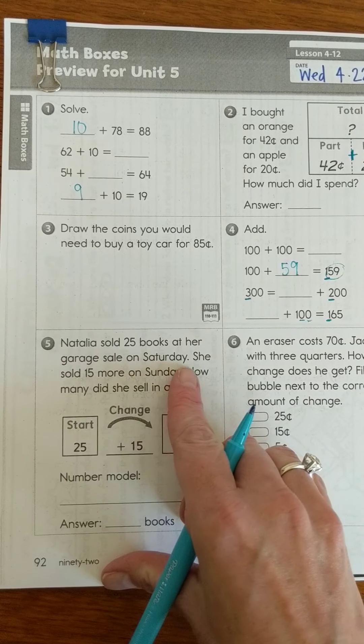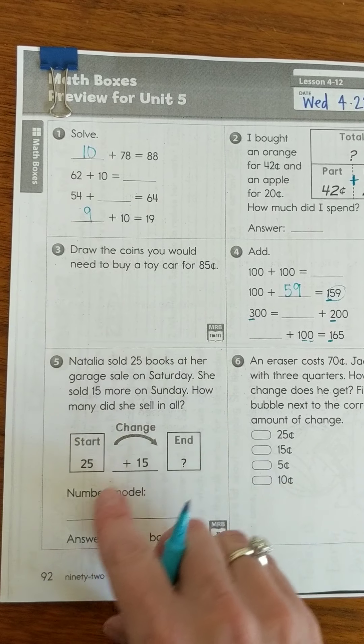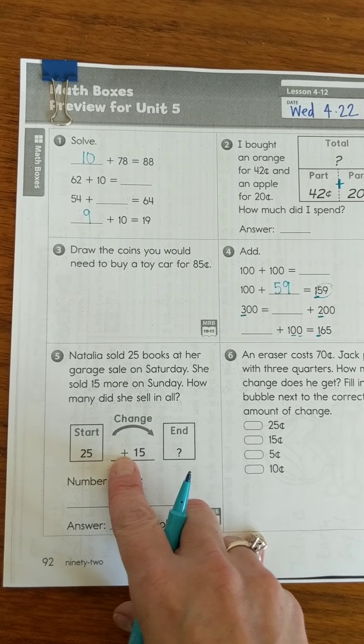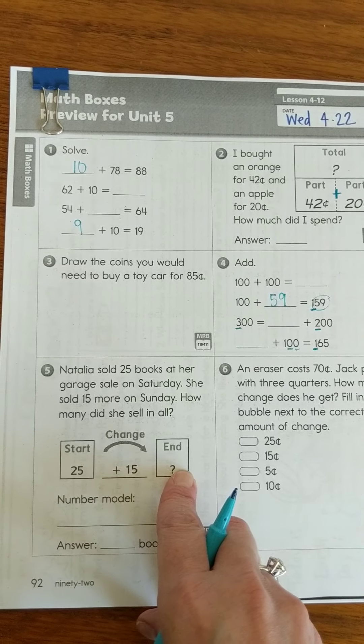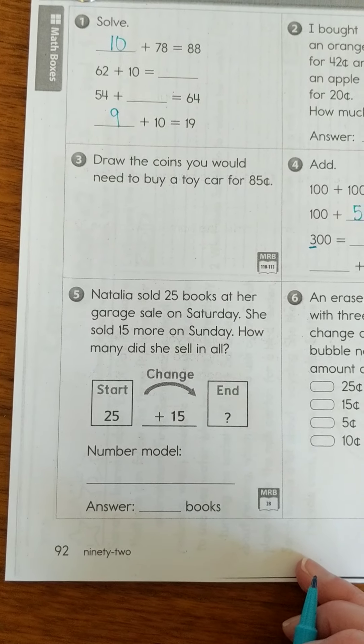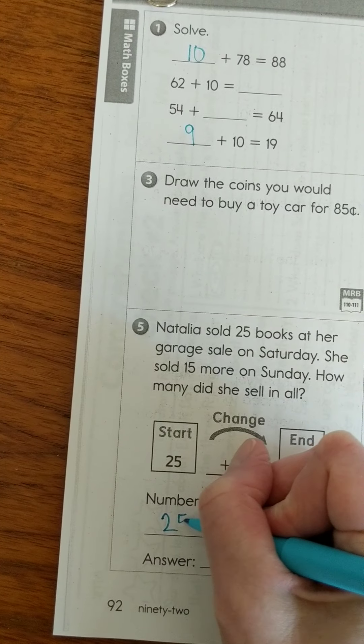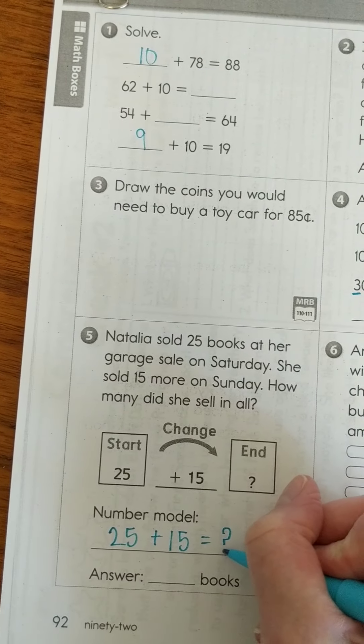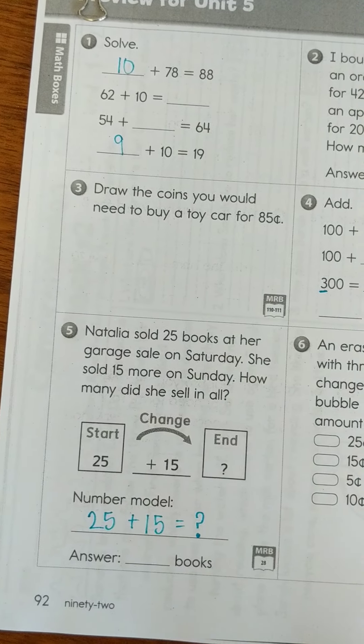Natalia sold 25 books at her garage sale on Saturday. She sold 15 more on Sunday. How many did she sell in all? Start, change, end. She started with 25, our change is the 15 more that she sold, and our end is how many she sold all together. So for our number model, I'll go ahead and do the number model with you and then I'll have you guys do the answer on your own. It pretty much gives us our number model right here. We started with 25, we added 15, and our answer is what? So you go ahead and solve for that question mark and you fill in your answer down here.